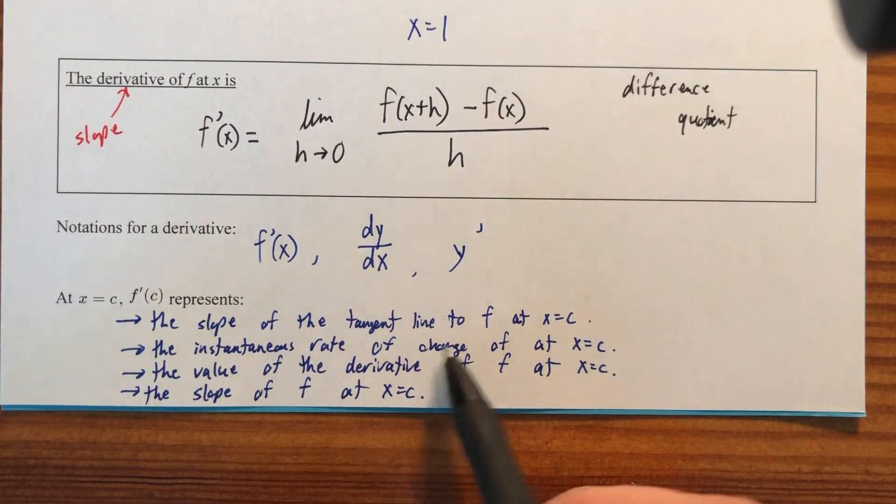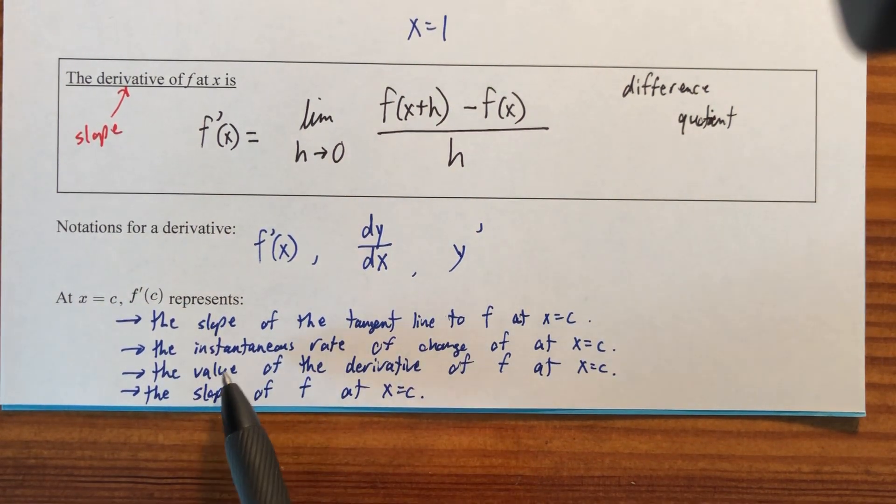So any of those are phrasings that you will see in reference to this. So f prime of c could be referred to as the slope of the tangent line, the slope of f, the instantaneous rate of change, and the value of the derivative.